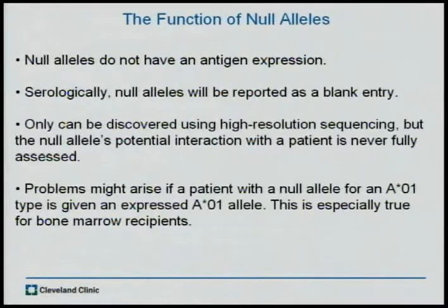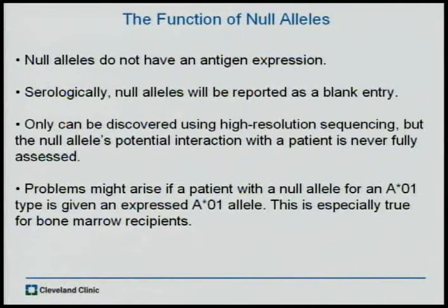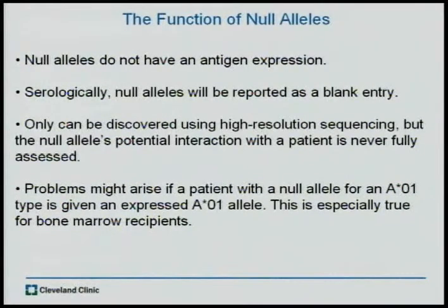Imagine we try to find and develop a system where we have all unrelated donors in a file so that we can pull it up when a patient needs to be matched. However, there's something known as a null allele that doesn't have an antigen expression. In serology, when reagents are used to try and find the antigens, it doesn't come up and is just reported as a blank entry. Null alleles can only be discovered using high-resolution sequencing, but even then, for certain cases like HLA-A01, there are certain exons or regions of DNA that are specifically sequenced, and in years past those hadn't been sequenced, so the null allele expression was not discovered.